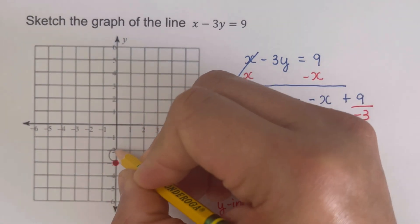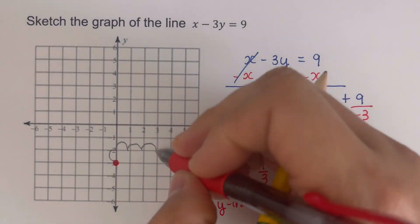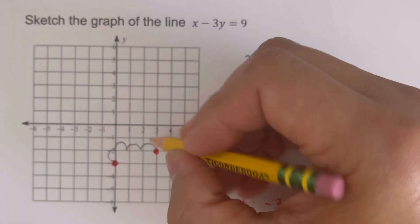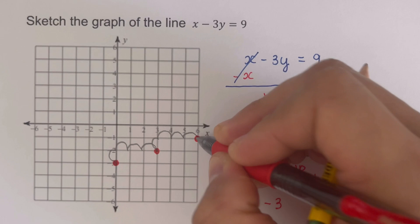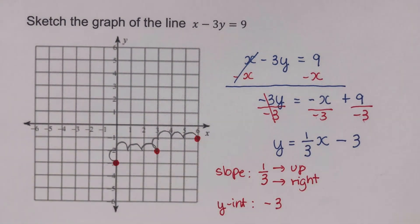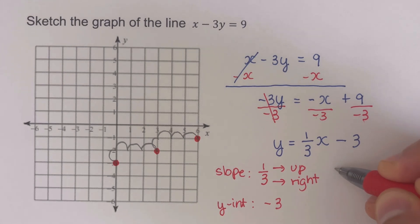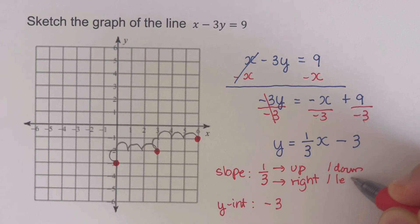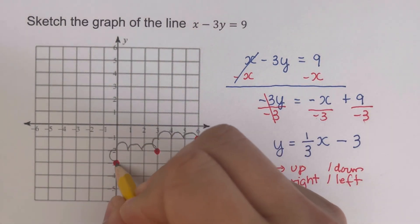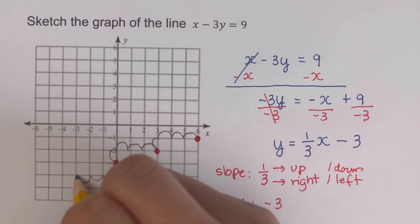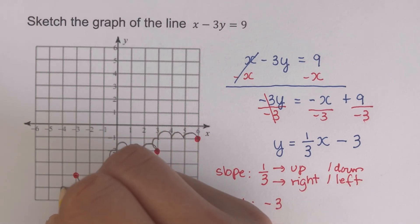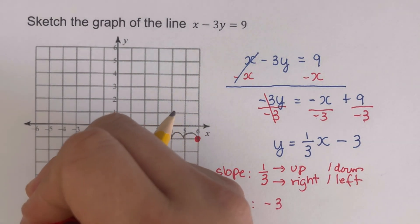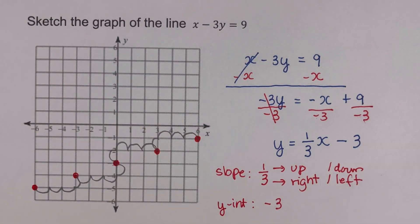Starting from the y-intercept at negative three, we go up one and right three to plot the next dot, then up one and right three again for another dot. To find points on the opposite side, we go down one and left three. With enough points plotted, we sketch the line of this equation.